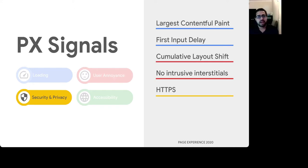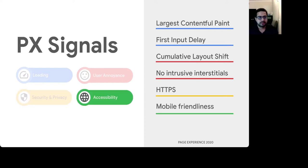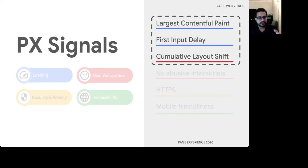For security and privacy, we have the HTTPS protocol signal. Users should be able to confidently browse the internet without having to worry about man-in-the-middle attacks or improper impersonations. And lastly, the mobile-friendliness signal covers the accessibility pillar, which measures how effective the pages are on small screens, often used by mobile phones. The first three metrics — Largest Contentful Paint, First Input Delay, and Cumulative Layout Shift — are the Core Web Vitals, a set of metrics that apply to all web pages and should be measured by all site owners, and that will be surfaced across all Google tools.